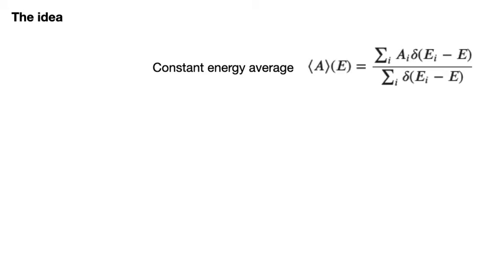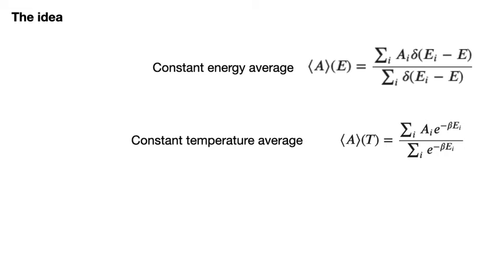If we wish to calculate an ensemble average at a constant temperature we have to use this expression. This expression is very like the constant energy expression. Notice however the delta functions are replaced by these exponentials. Remember also that beta here is 1 over k_B T where T is the temperature.